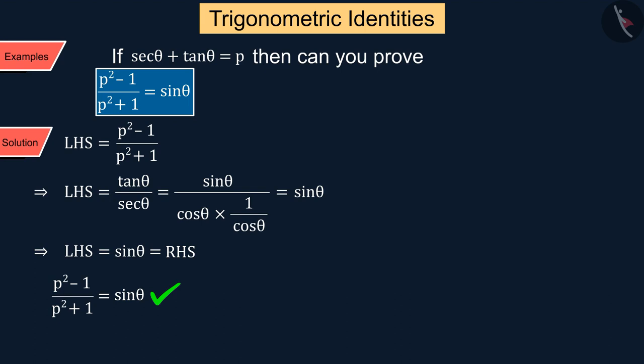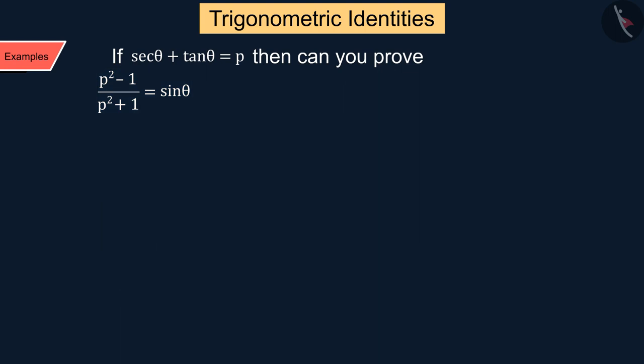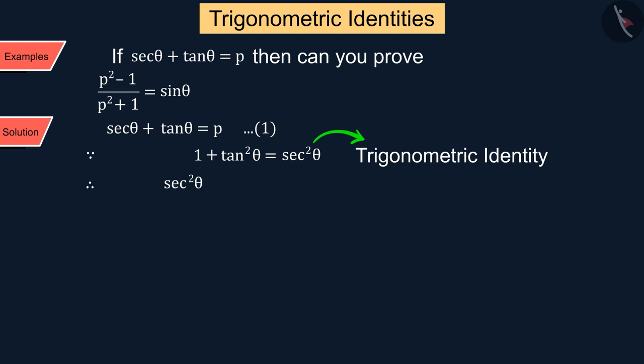But is this the only way to prove this equation? No, we can solve it in other ways also. Let's see. Given that sec θ plus tan θ is equal to p, which is represented by equation (1). And we know that 1 plus tan² θ is equal to sec² θ.